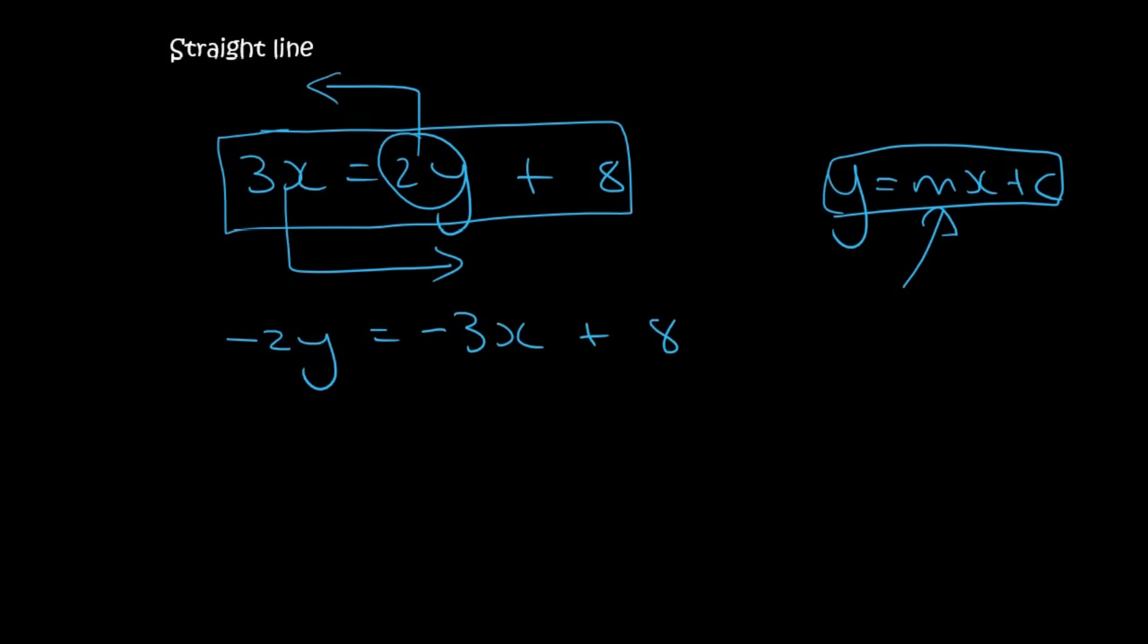Now we need to get rid of this minus 2. So we're going to divide by minus 2, because then it cancels. But then you have to divide everything by minus 2. And so you end up with y equals to, this you could type on your calculator, but it's 3 over 2x. And then a plus and a minus, this would make minus 4.